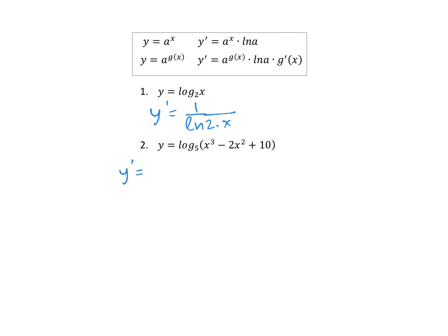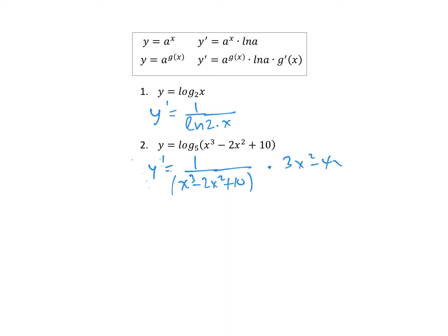For question 2, y prime for log base 5: it's 1 over ln(5). Then for a function g(x) as the argument, it's 1 over g(x) times the derivative of g(x), which is 3x² minus 4x, so we get (3x² minus 4x) over (x³ minus 2x² plus 10).